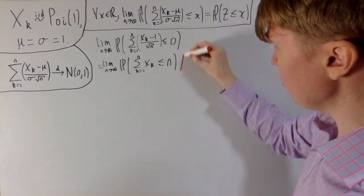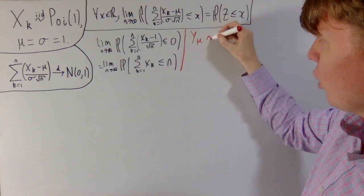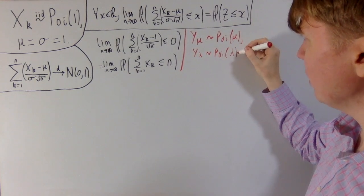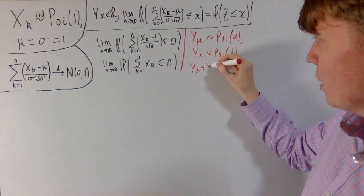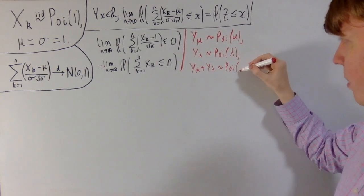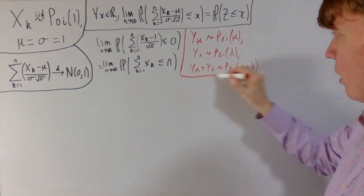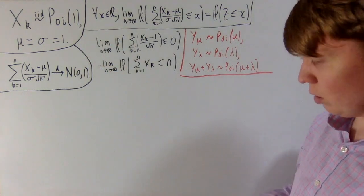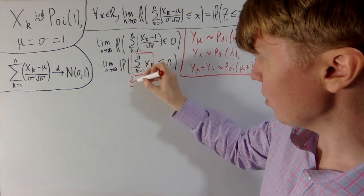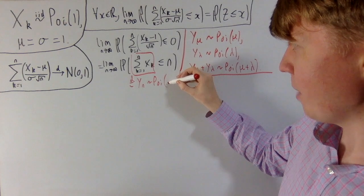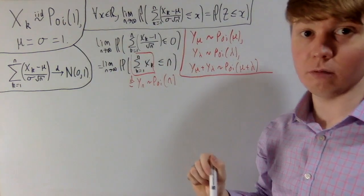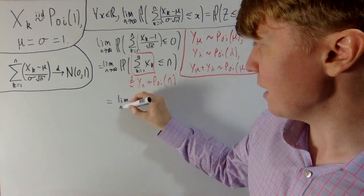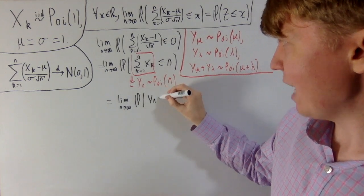We can use another useful fact about the Poisson distribution: if y_mu is Poisson with parameter mu and y_lambda is Poisson with parameter lambda, and they're independent, then y_mu plus y_lambda is also Poisson with parameter mu plus lambda. We've got the sum of n independent Poisson random variables each with parameter 1, so the entire sum is equal in distribution to y_n, which is Poisson with parameter n — you just add the parameters since they're independent. So we write this as the limit as n goes to infinity of the probability that y_n is less than or equal to n.